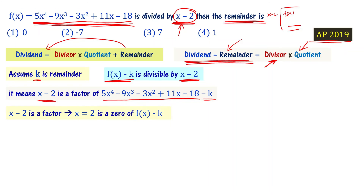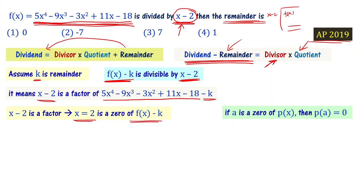If x minus 2 is a factor of f of x minus k, then x equal to 2 is a zero of f of x minus k. We know that if a is a zero of p of x, then p of a equals 0. So f of x minus k at x equal to 2 gives 0.